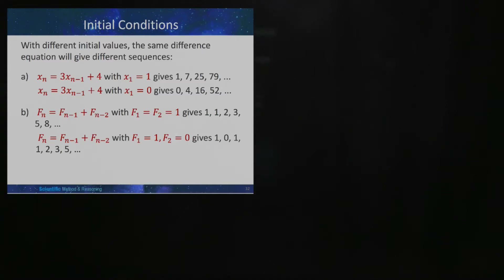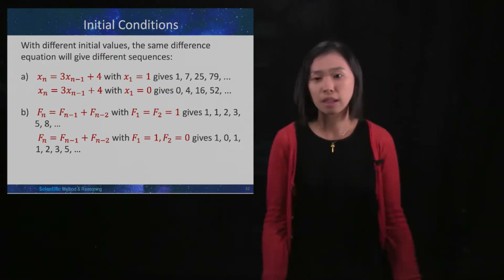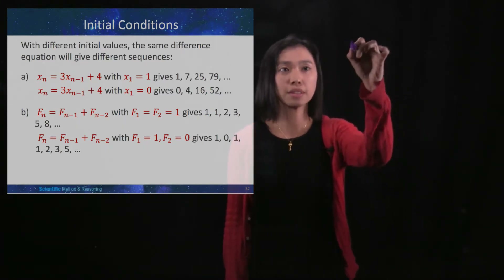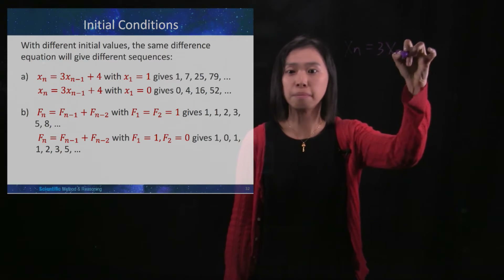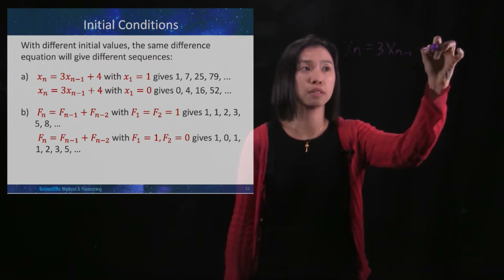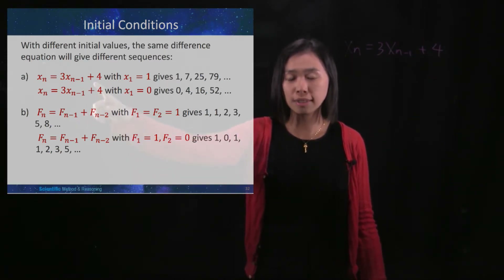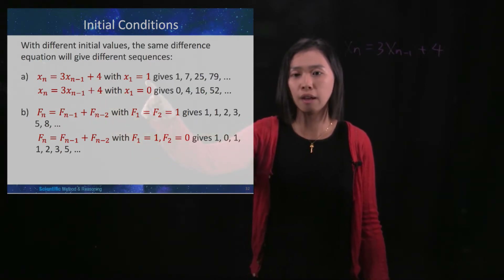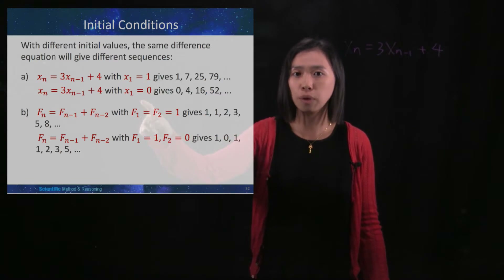With different initial values, the same difference equation will give different sequences. For example, xn = 3x(n-1) + 4. Here in part A, we have two instances of the same difference equation. The first one has initial condition x₁=1, and the second one has initial condition x₁=0.